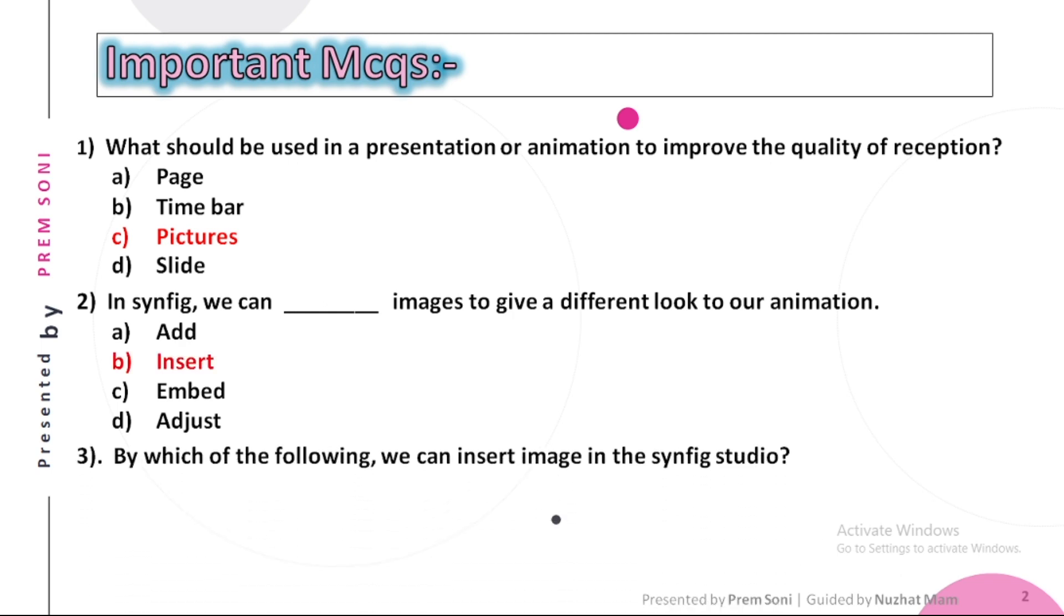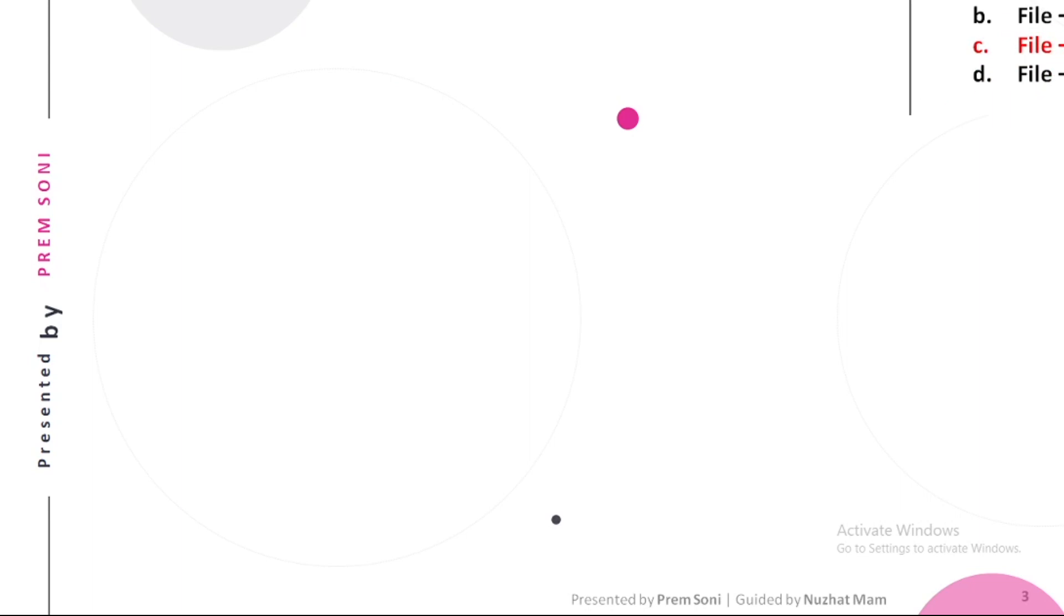Third, by which of the following can we insert image in the Synfig Studio? Options are: a. File Insert, b. File Preview, c. File Import, d. File Image. The answer is File Import. Fourth, how many options are there for importing image in Canvas? Options are: a. 2, b. 3, c. 4, d. 5. The answer is 2.